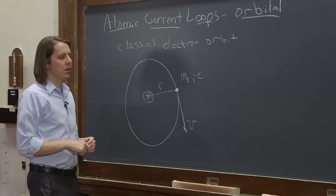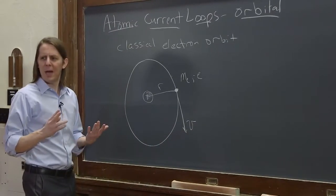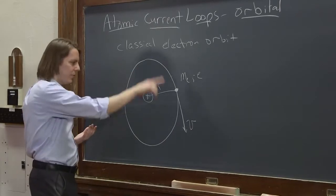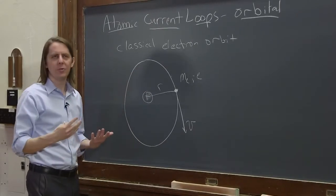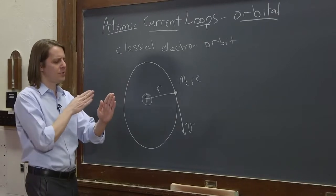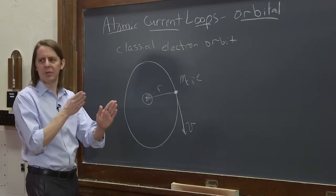So for magnetism, we care about the current. So we would have to imagine this electron is a current. And the way you do that is you think back, what exactly is a current? A current is just how much charge crosses a plane per unit time.